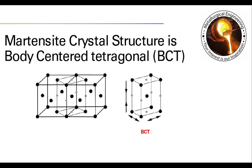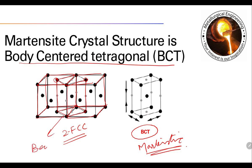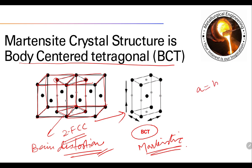Two interpenetrating FCC structures will give us the BCT structure — body-centered tetragonal — which is martensite. Matching the face-center upper face-center atoms to the corners produces this BCT structure through the Bain distortion mechanism. In this BCT structure, a equals b but does not equal c.